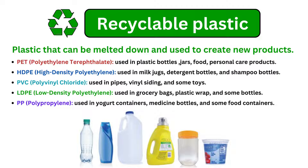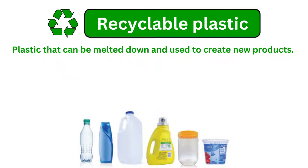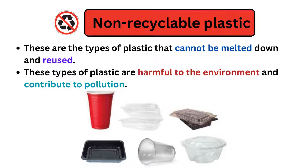High-density polyethylene is used for milk jugs, detergent bottles, and shampoo bottles. PVC — polyvinyl chloride — is used for pipes, vinyl siding, and some toys. Polypropylene is commonly used in medicine bottles and some food containers.